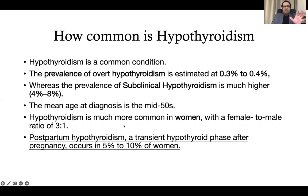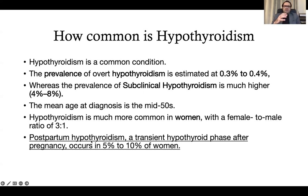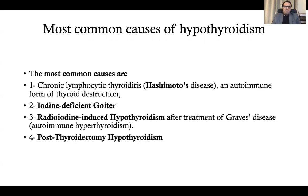Hypothyroidism is much more common in women, with a female-to-male ratio of 3 to 1, and diagnosis is usually in the mid-50s, but it can be diagnosed even in newborns as congenital hypothyroidism. There is also postpartum hypothyroidism, which is usually a transient hypothyroid phase lasting a few months and then resolved in the majority of cases. It occurs in around 10 to 15% of women.